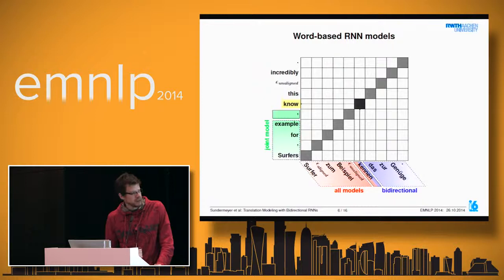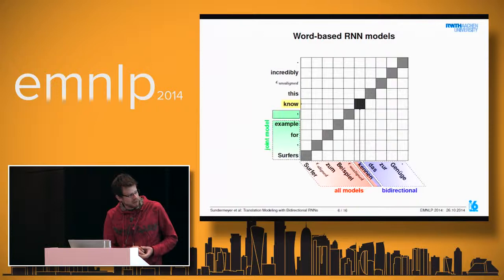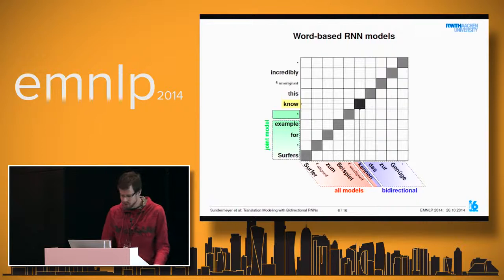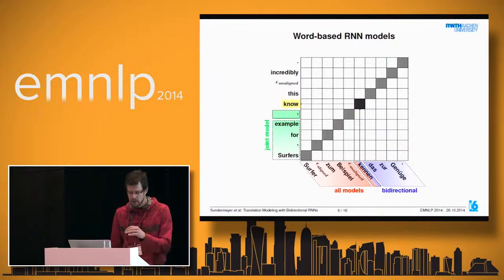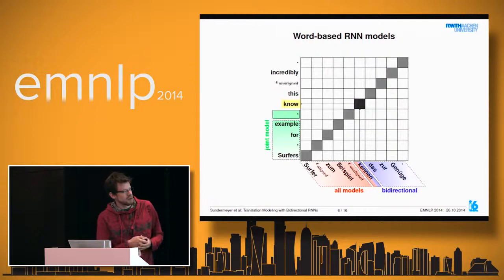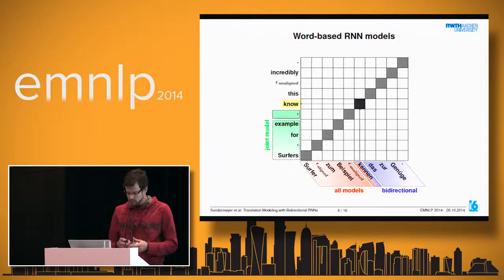In an example, when translating the source word 'canon' to the target word 'no', in the simplest model the network has only the source history available—'canon' is fed directly and the complete source history is encoded in the hidden layer via recurrent connections. In the joint model, we also feed in the last target word, with complete target history available through recurrency.